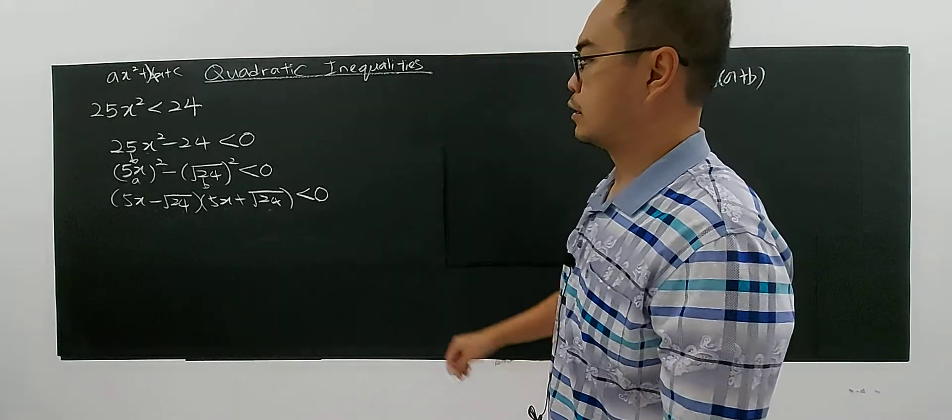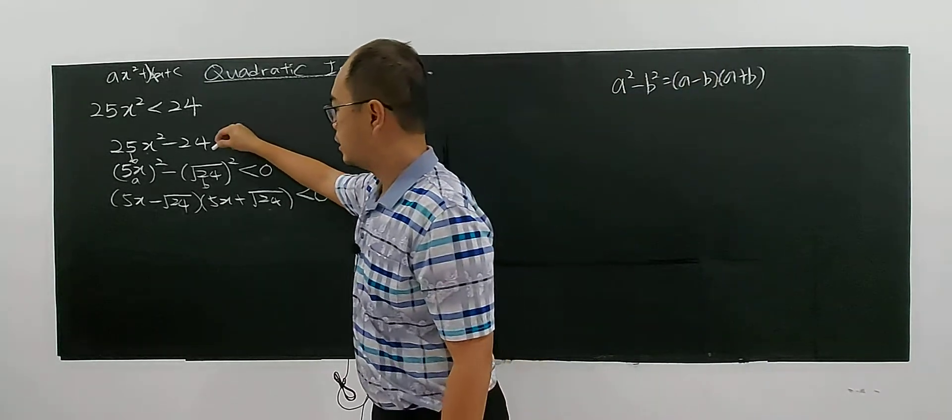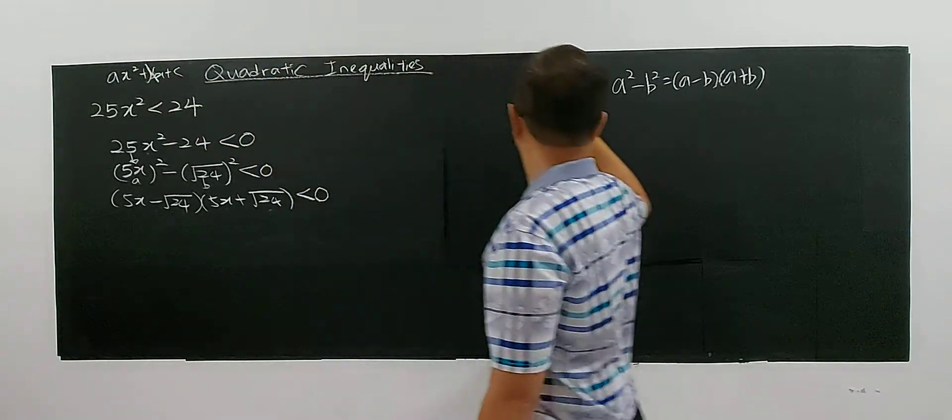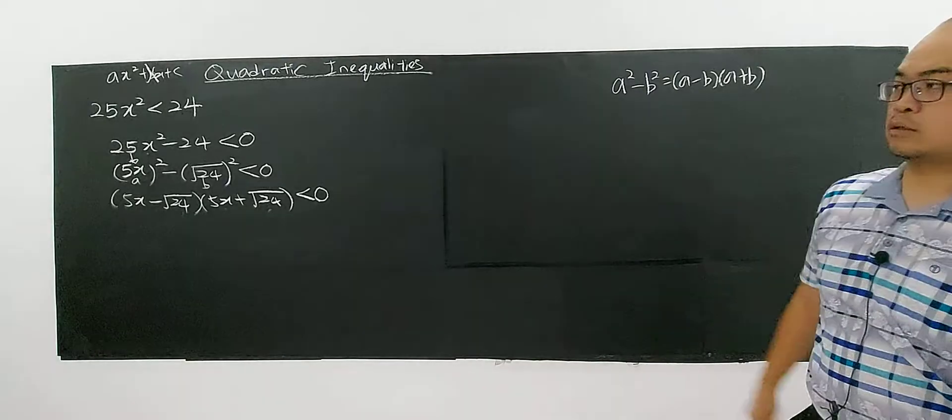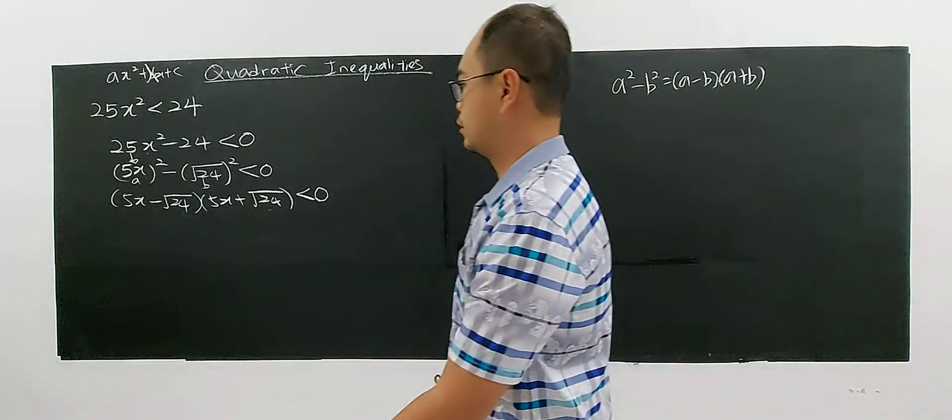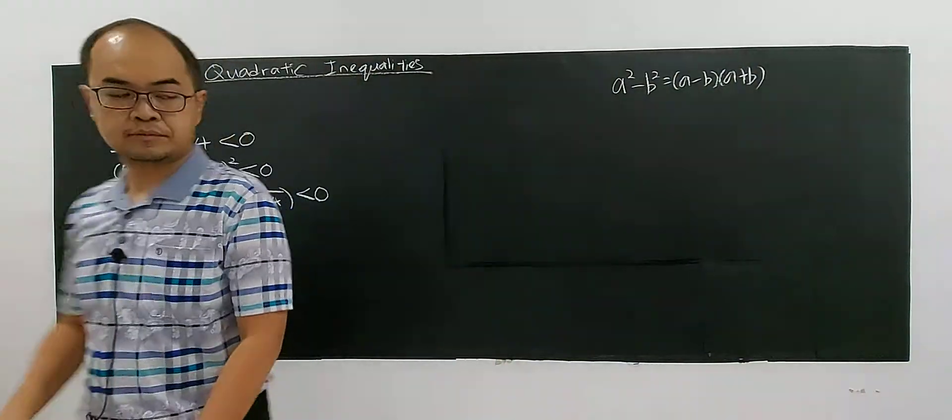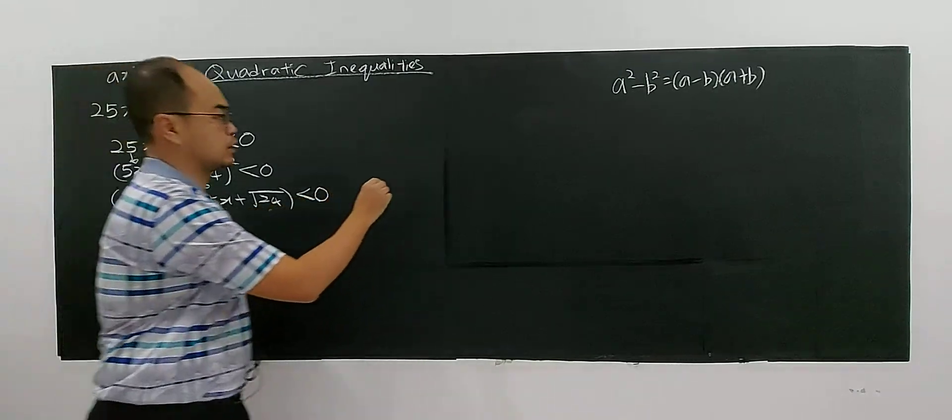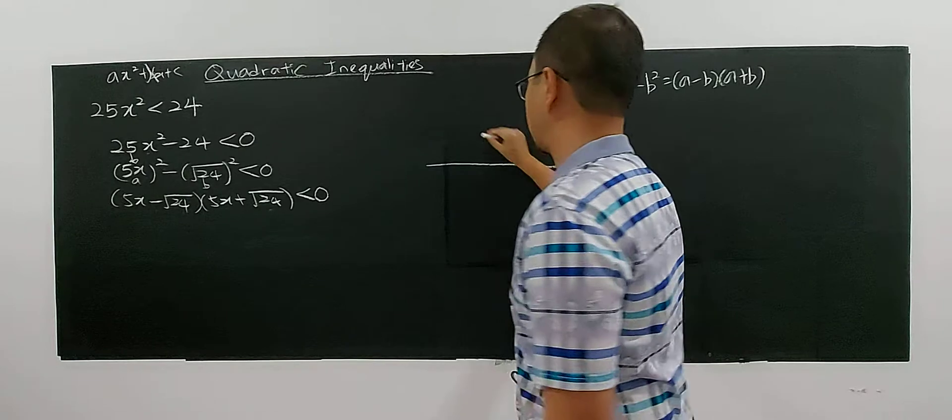Then, again, the same thing. This special case here is, if, let's say, you have no bx term, then you can factorize by using the square of difference. So now, then you can draw the quadratic using graphical approach.